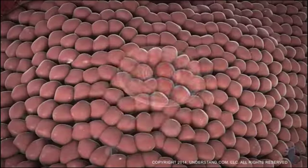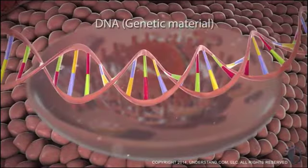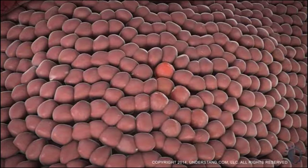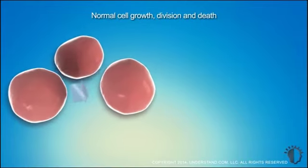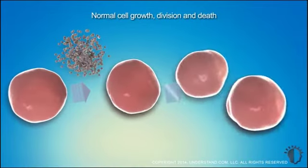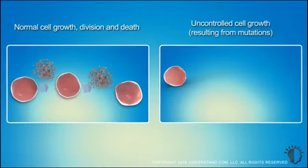Breast cancer, like all cancers, results from changes called mutations in a cell's genetic material, DNA, that lead to unregulated cell growth and division. Instead of a normal process where cells grow, divide, and die off when they become old or damaged, cells with certain types of mutations behave abnormally.